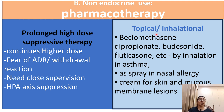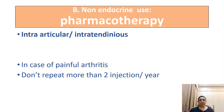Topical or inhalation corticosteroids — like betamethasone dipropionate, budesonide, and fluticasone — can be given through inhalation in asthmatic patients, as a spray in nasal allergy, and as cream for skin and mucous membrane lesions. Intra-articular or intra-tendinous injections can be used in painful arthritis and should not be repeated more than two doses in a year.